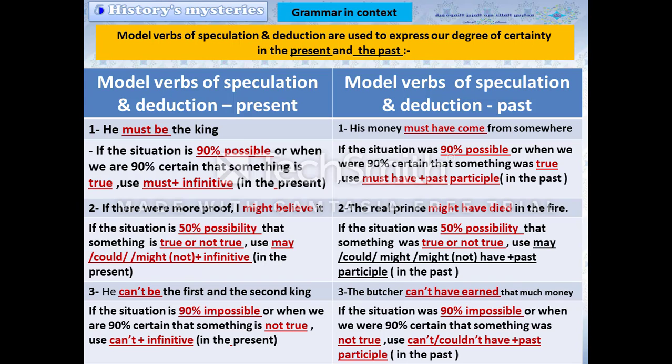Modal verbs of speculation and deduction are used to express our degree of certainty in the present and past. Number 1: 'He must be the king.' If the situation is 90% possible, or when we are 90% certain that something is true, use must plus infinitive in the present. In the past: 'His money must have come from somewhere.' If the situation was 90% possible, use must have plus past participle.